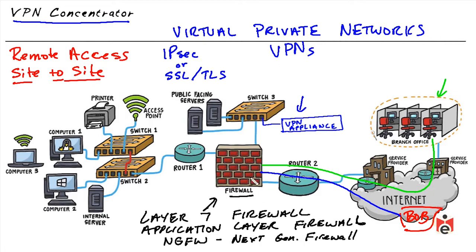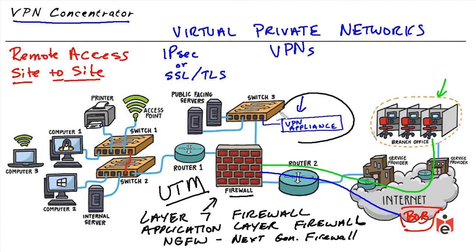When a firewall has a laundry list of features — proxy services, application layer gateway, next-generation firewall, data loss prevention (DLP) looking for sensitive information that shouldn't leak to the internet — it can be referred to as a UTM, or Unified Threat Management system. However, one device can become overloaded handling VPNs, firewall services, and everything else. For that reason, we might use a dedicated VPN appliance to offload VPN sessions from the firewall, terminating VPN connections at the dedicated appliance instead.